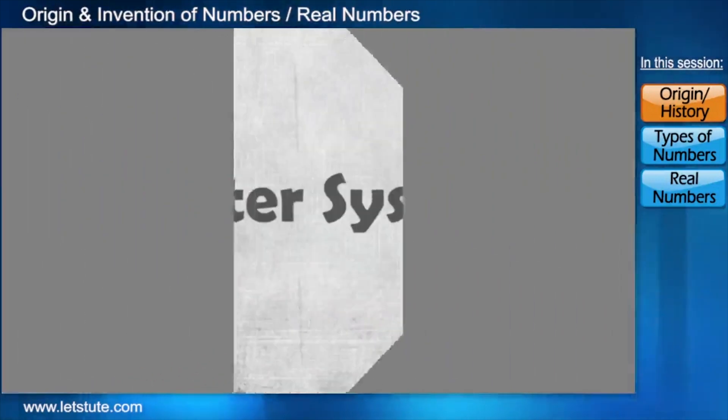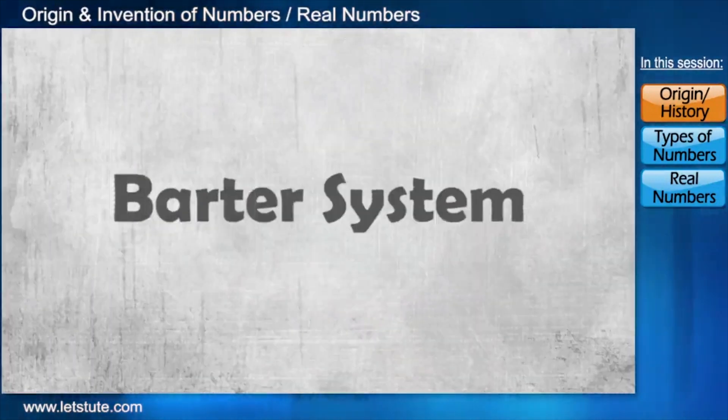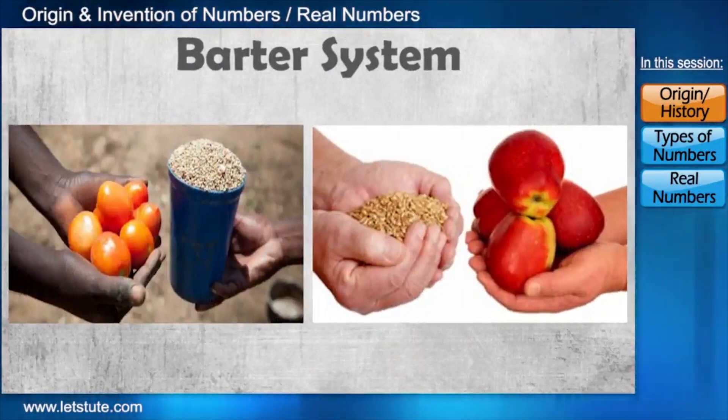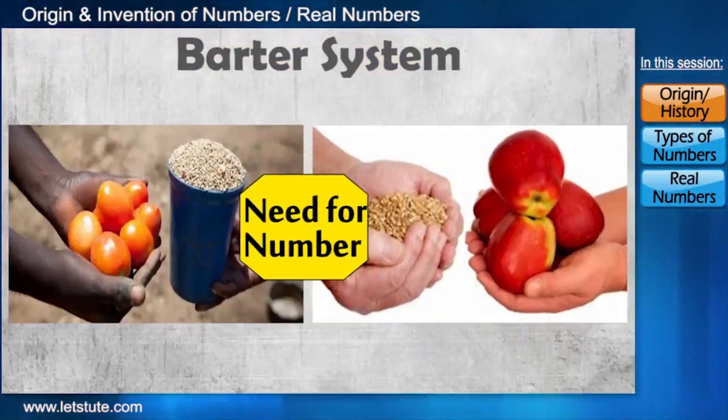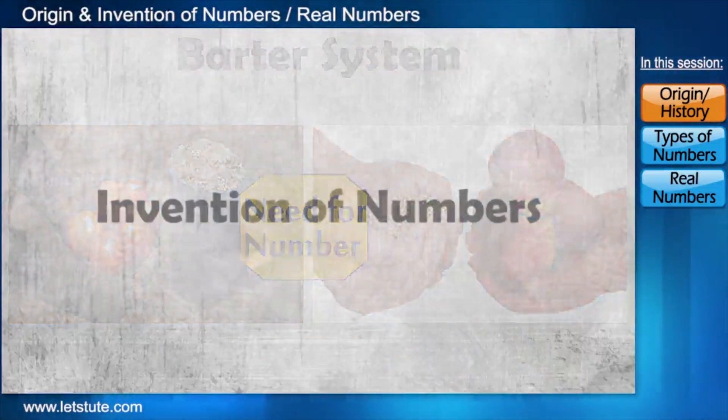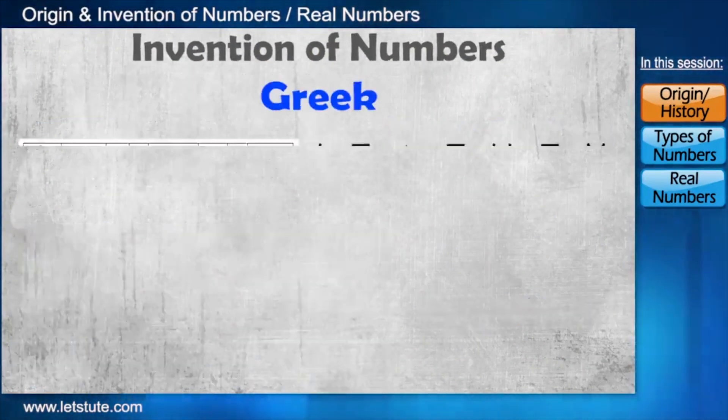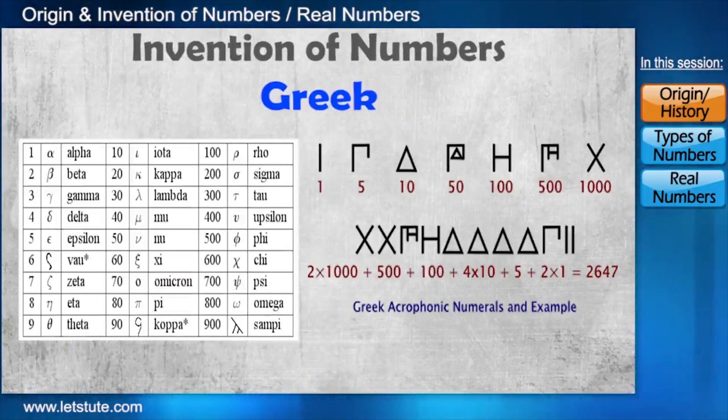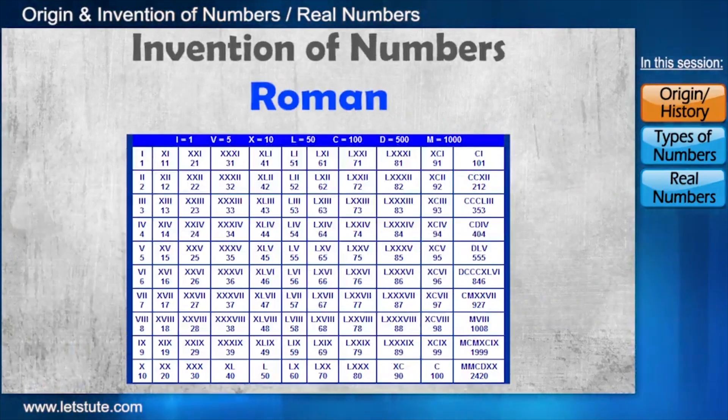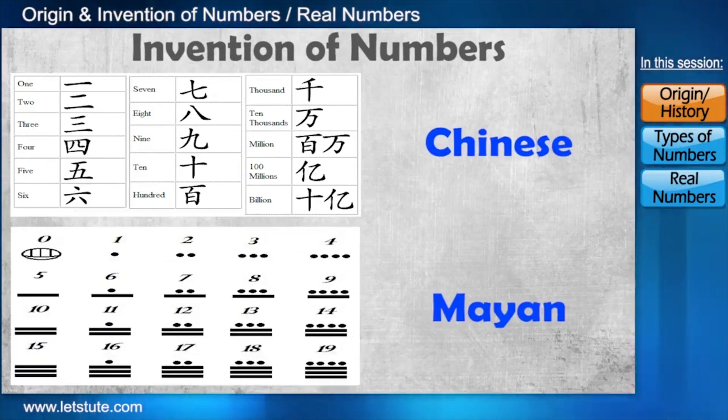Centuries later, barter system was started, where people started exchanging things. And that is when they realized the need for numbers. The invention of numbers was not a linear process. Some cultures developed number systems independent from each other. Or they tried to improve on an old system when it did not meet their needs.